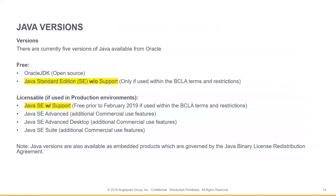Starting with the free category: Oracle JDK still remains open source. Java Standard Edition is free if no support is required from Oracle, and if it's used within the terms and restrictions of the Binary Code License Agreement, which we'll get to in a few minutes.